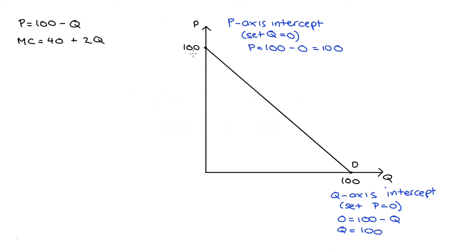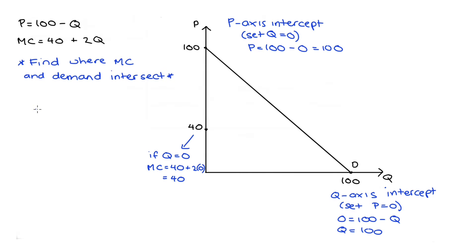The next thing I'm going to do is draw the marginal cost curve. From the equation, MC has a price axis intercept at 40 — because when quantity equals 0, marginal cost is 40 plus 2 times 0, so 40. I'll also find where the marginal cost and demand curves intersect, which will be useful for the welfare analysis and for anchoring the MC line on the diagram.